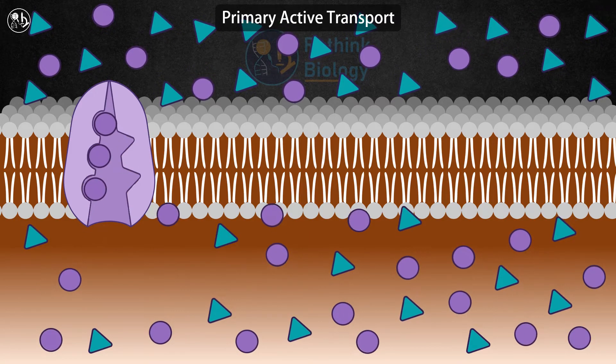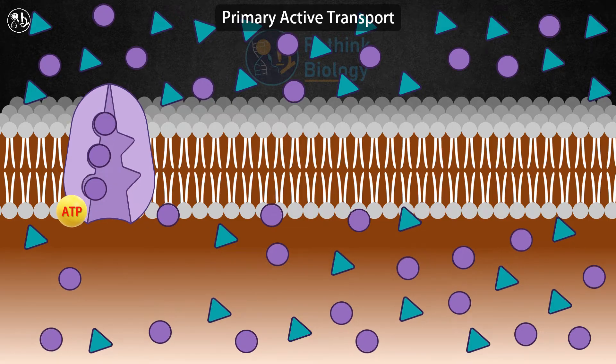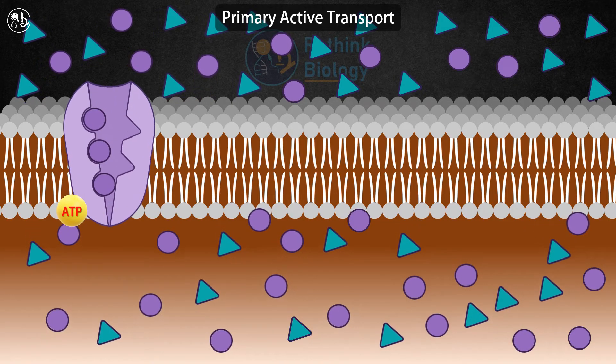First, three sodium ions and an ATP molecule bind to the pump. ATP is then used to phosphorylate the pump, causing it to change shape and release the sodium ions on the opposite side of the membrane.